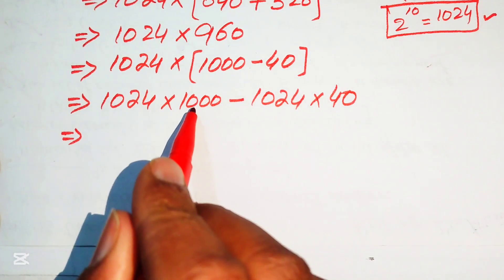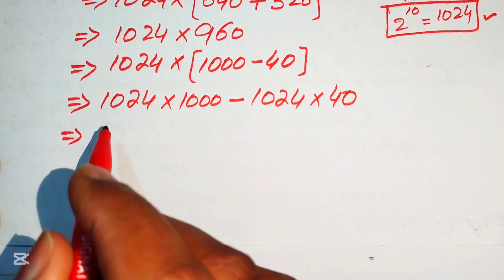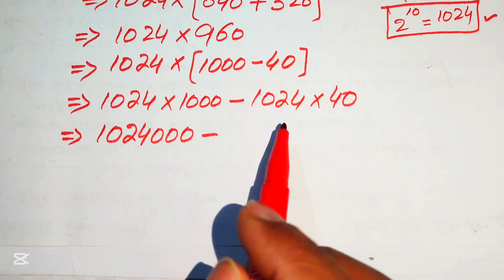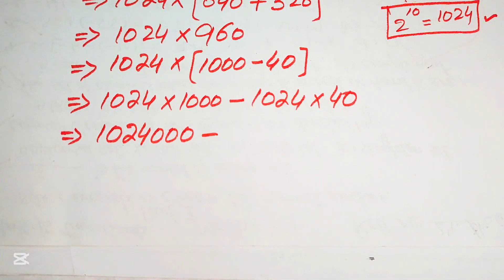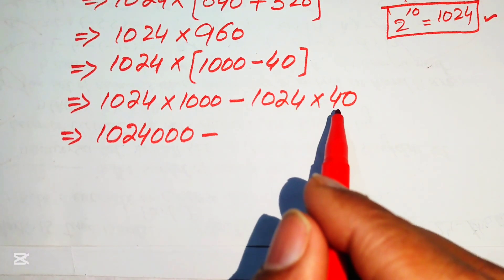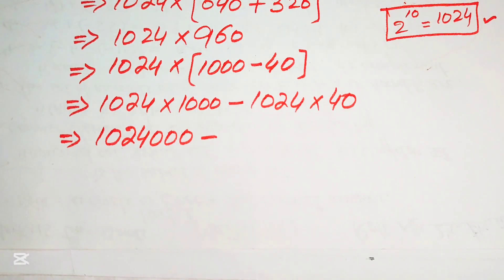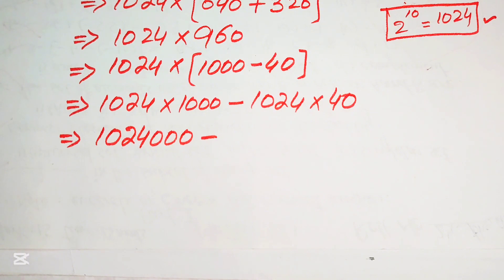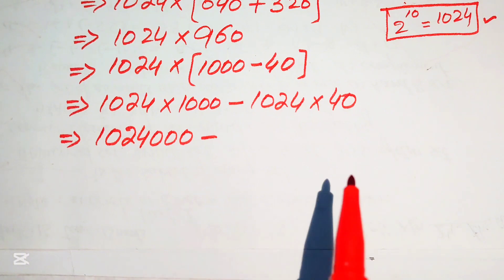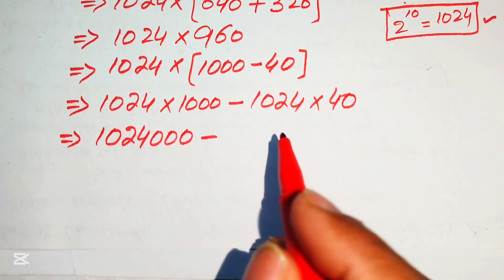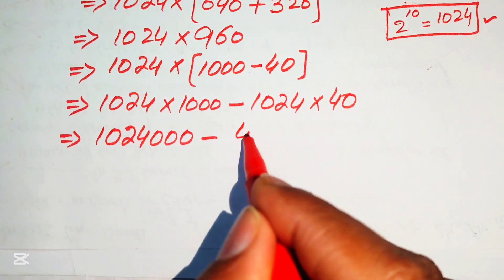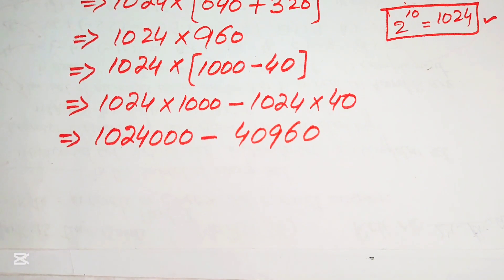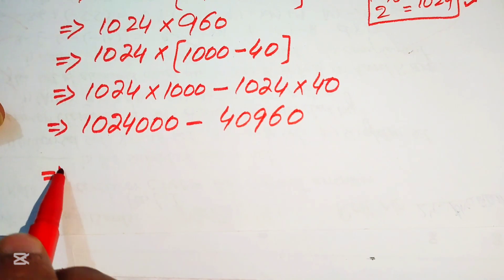Multiplying 1024 by 1000 simply adds three zeros to give 1,024,000. Multiplying 1024 by 40 is straightforward multiplication — the kind done in primary school — and gives 40,960.